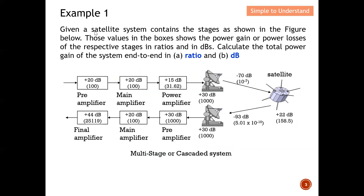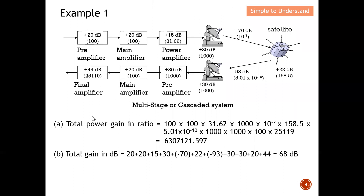Let's quickly do the first example. Given a satellite system containing stages as shown in the figure, the values in the boxes show the power gain or power loss of the respective stages in both ratio and decibel. Calculate the total power gain of the system in ratio and in decibel. I have redrawn the diagram here. To find the total gain in ratio, I need to obtain all the individual stage values in ratio.